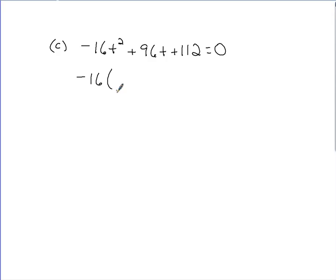We take out a negative 16. That leaves you with t squared. It would be minus 6t. And this would be minus, it should be 7. Yeah, 7. That equals zero.